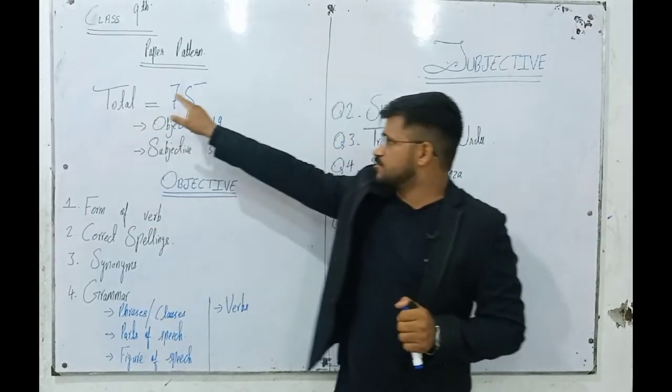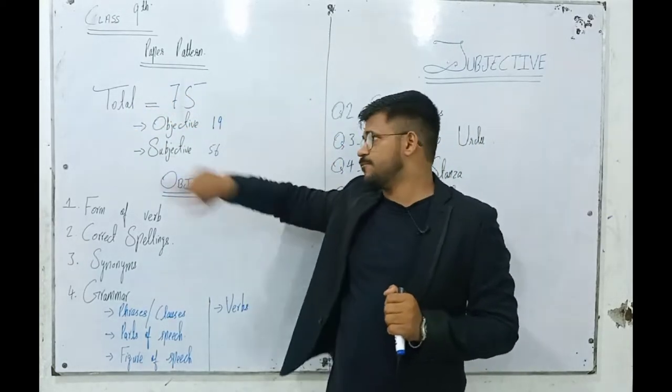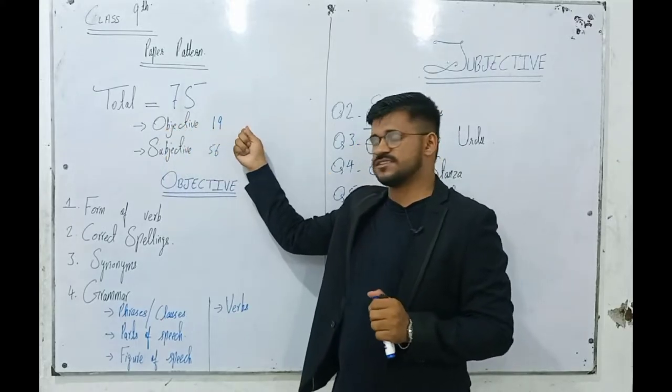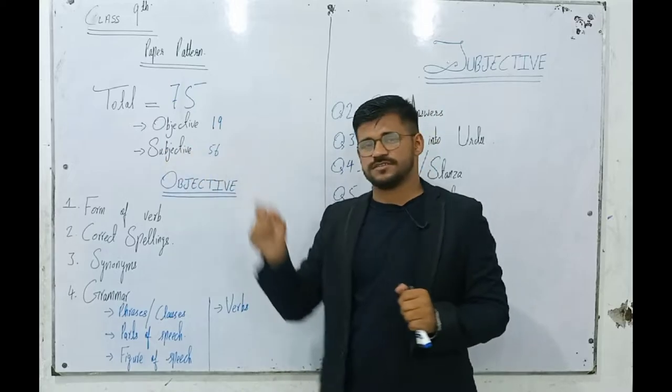The total marks of the 9th class paper are 75 marks. The objective is 19 marks and the subjective is 56 marks.